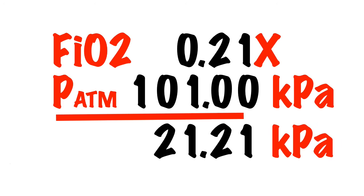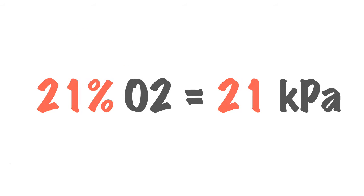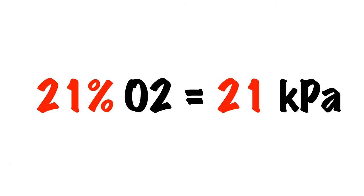Due to a quirk of fate at sea level the percentage of oxygen is roughly equal to the partial pressure of oxygen, i.e. 21% equals 21 kilopascals.